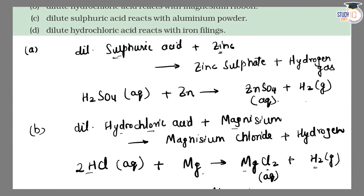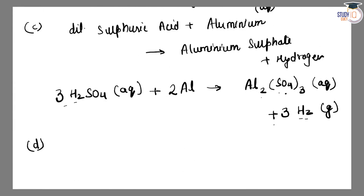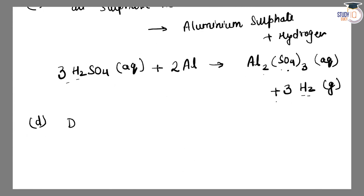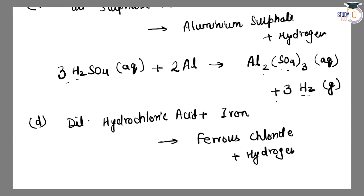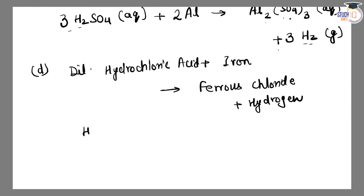Last, Part D: dilute hydrochloric acid reacts with iron filings. HCl plus iron — iron replaces hydrogen in the hydrochloric acid reaction. Products are iron chloride plus hydrogen gas.